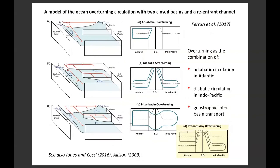Other studies have addressed this multi-basin question using a reduced gravity or two-layer approach. Jones and Cessi had a nice paper using a two-basin model where the interface between layers was deeper in the Pacific light basin than the Atlantic one, and that difference led to a geographically balanced exchange flow between the basins. Ferrari et al. took a similar approach and suggested that in the present-day climate, the overturning circulation might best be thought of as a combination of three circulations: an adiabatic circulation in the Atlantic, a diabatic overturning in the Indo-Pacific, and an interbasin circulation that exchanges water through the Southern Ocean geographically between the two basins. These multi-basin models reflect our growing appreciation that water mass transformation in the Indo-Pacific likely plays an important role in the buoyancy budget of the global overturning.